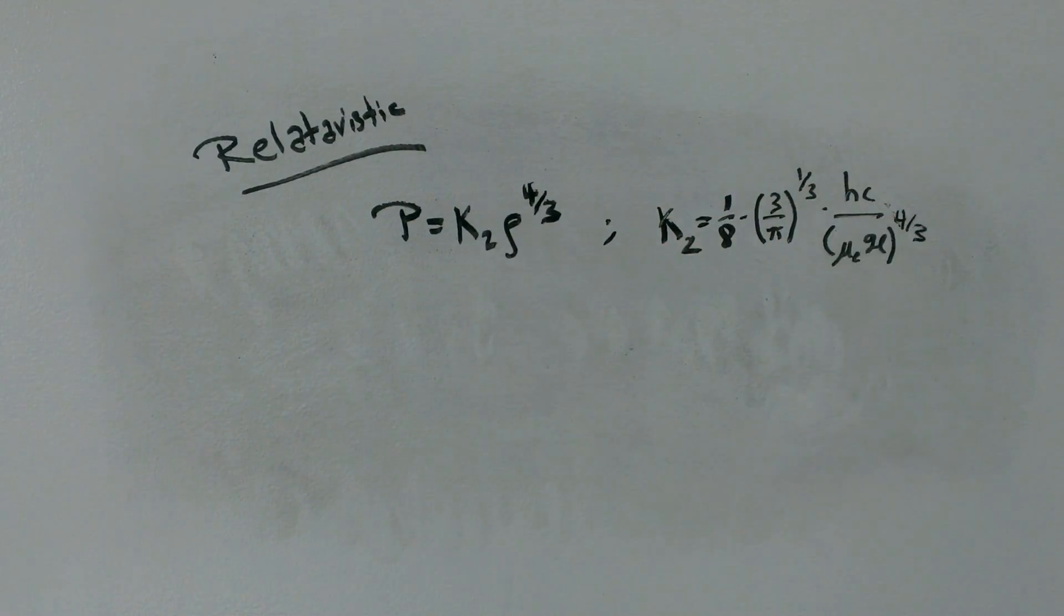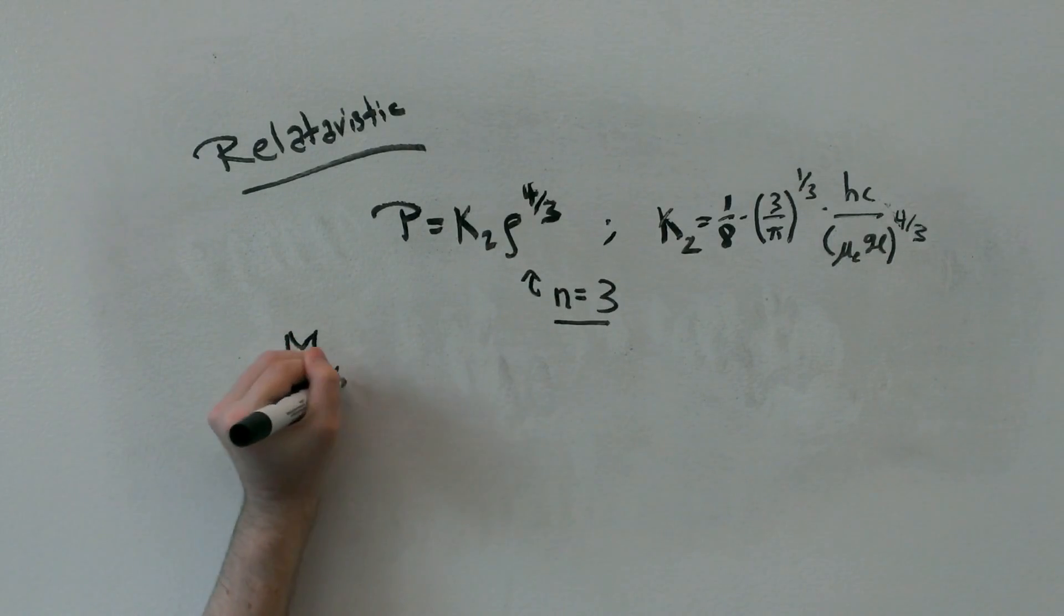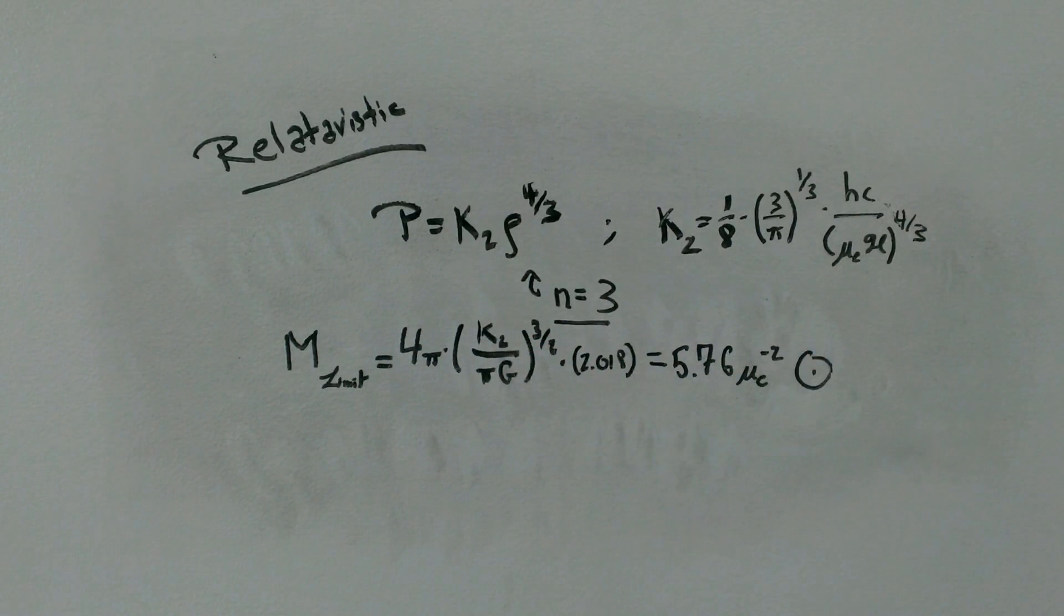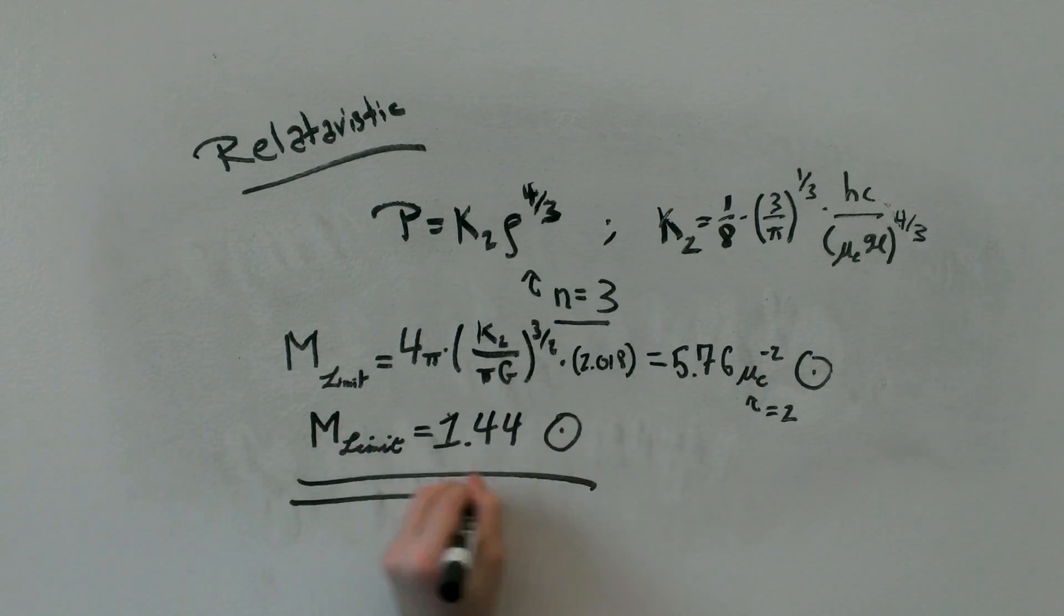Again, from the theory of polytropes, we get this relation, that the mass limit depends on the constant of the polytrope, or that the mass limit equals 5.76 times 1 over mu_e squared. Remembering that mu_e is 2, we get that the limiting mass is about 1.44 solar masses.